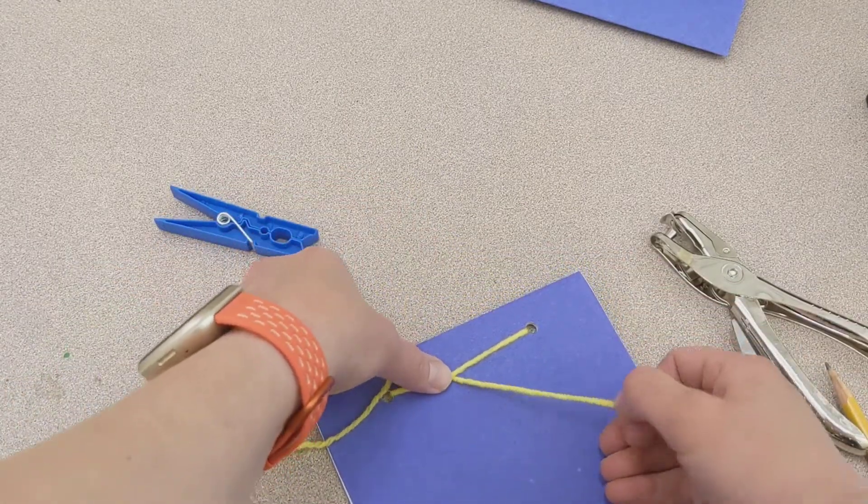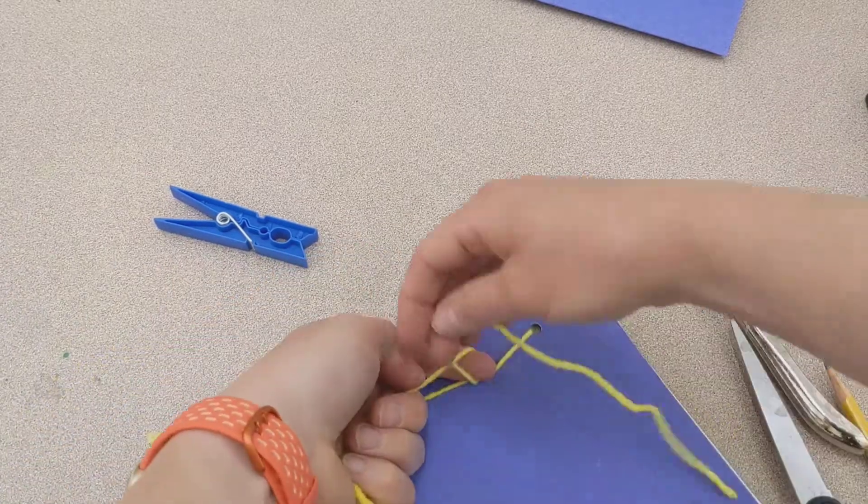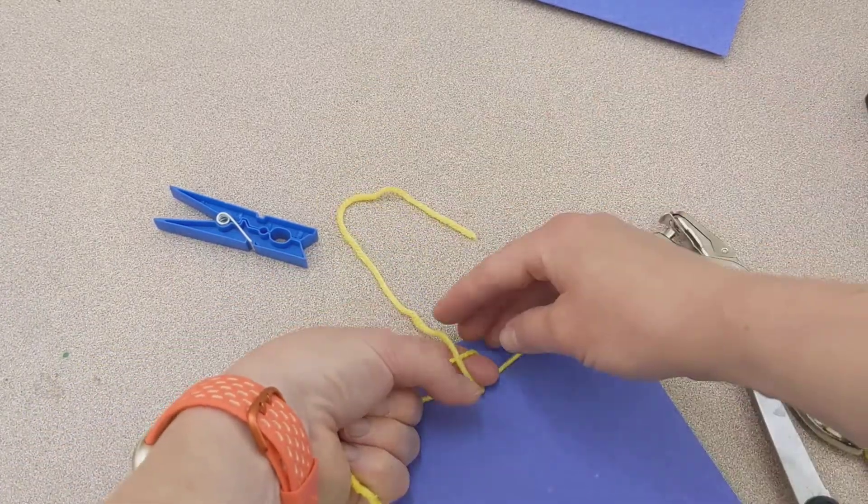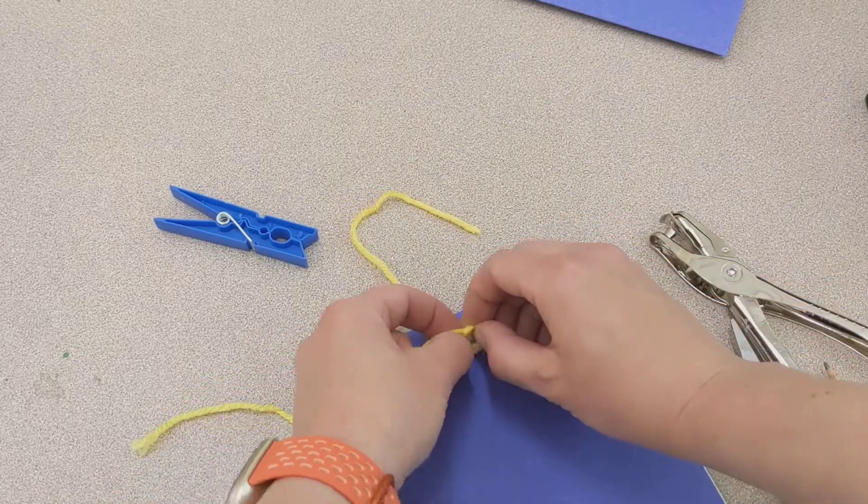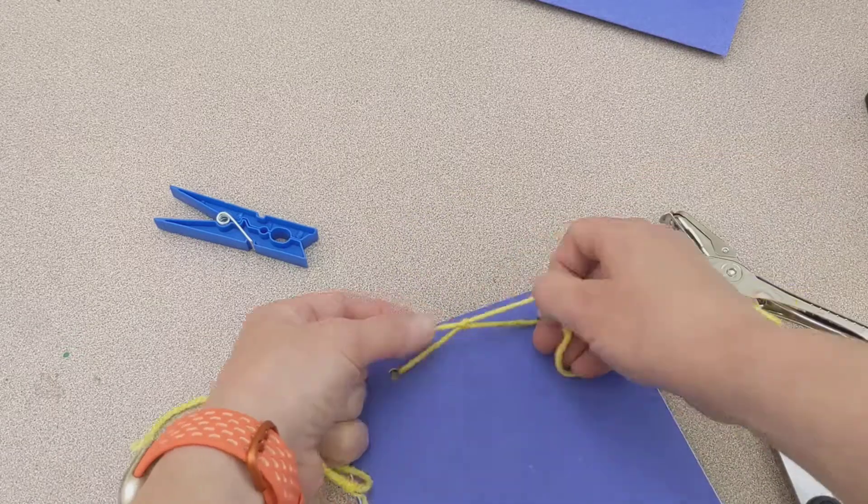You can get someone at your table to hold their finger here so you can make your next knot. So again, I make an X, the one that's on top. I'm going to twist it around and through that opening, pull it tight.